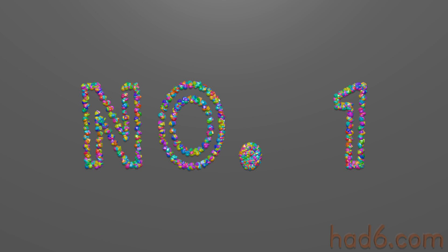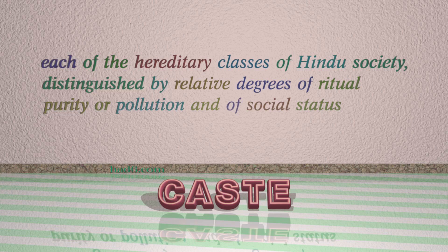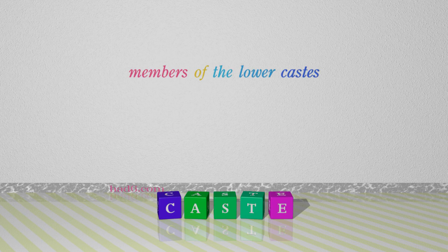Number 1: Caste. Which means each of the hereditary classes of Hindu society, distinguished by relative degrees of ritual purity or pollution and of social status. For example: Members of the lower castes.